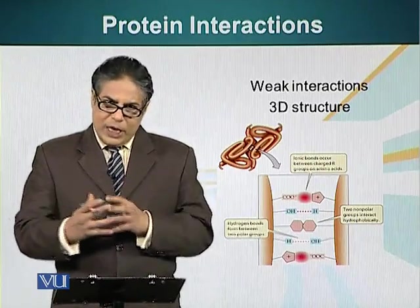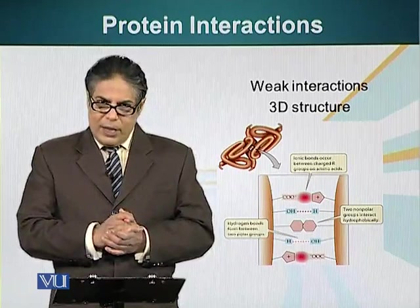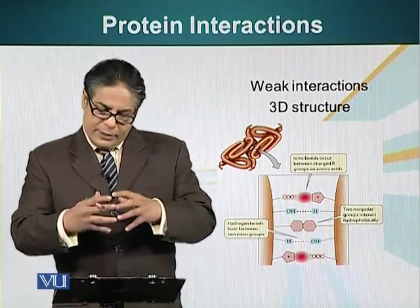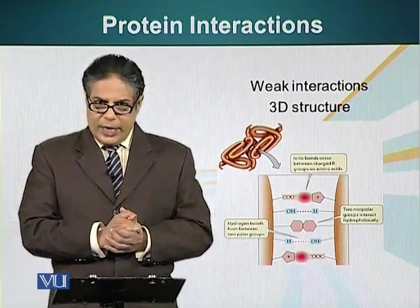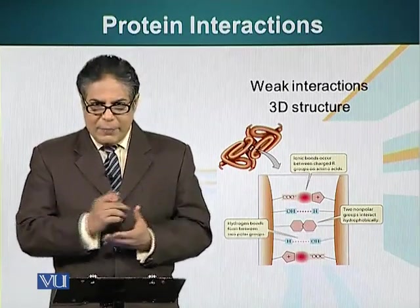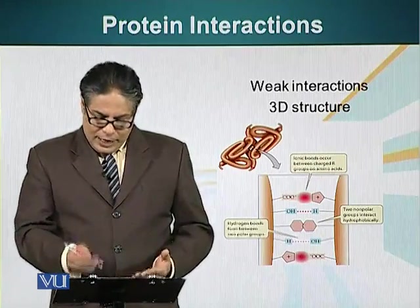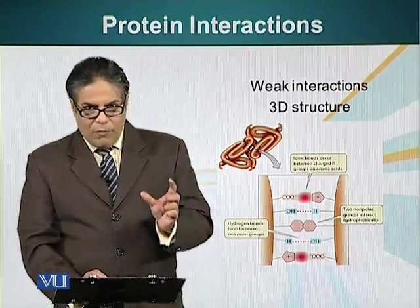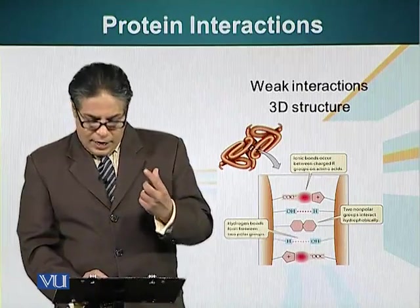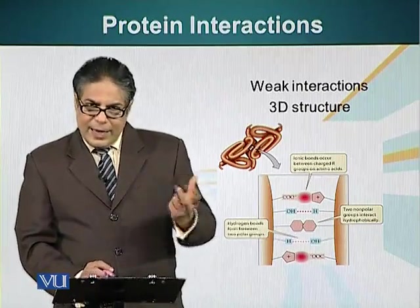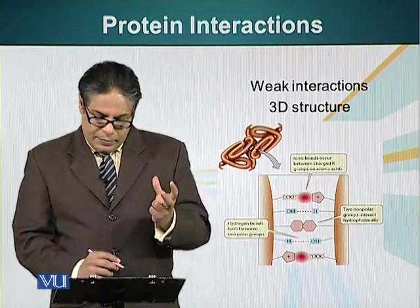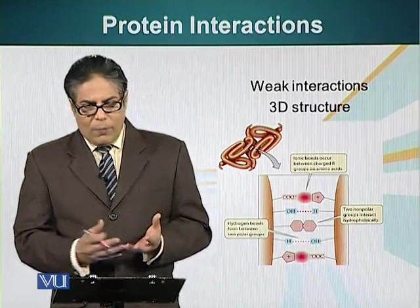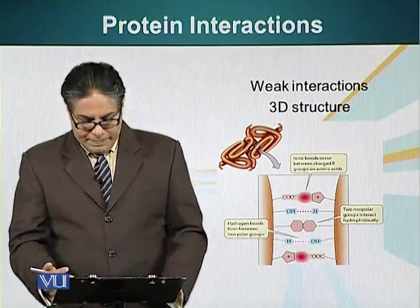Just having a complementary shape is not enough. Complementary chemistry is also very important. The sites at which these two proteins interact also have to have chemical compatibility. For example, a positively charged group of atoms is interacting with a negatively charged entity — in this case, a hydroxyl group is interacting with a positively charged R group of an amino acid on another protein.